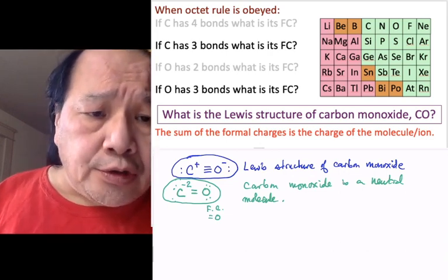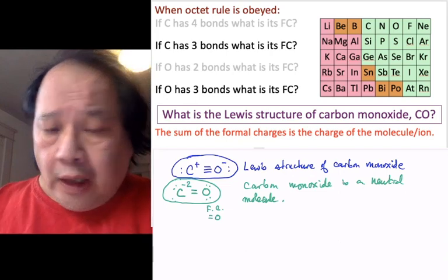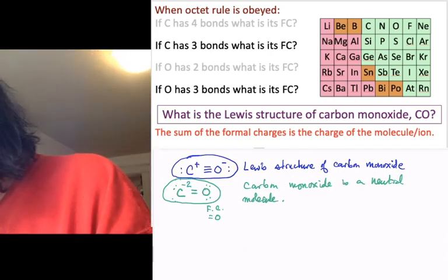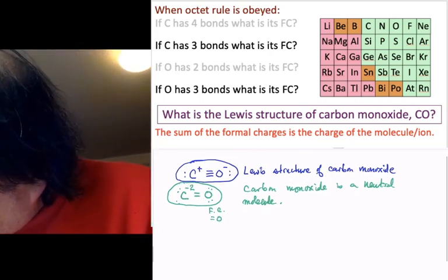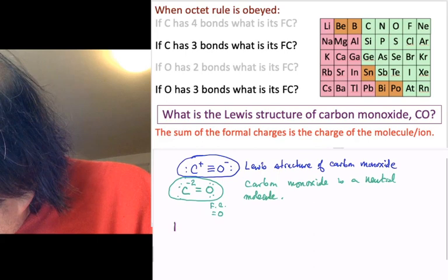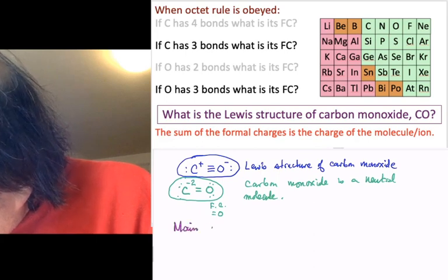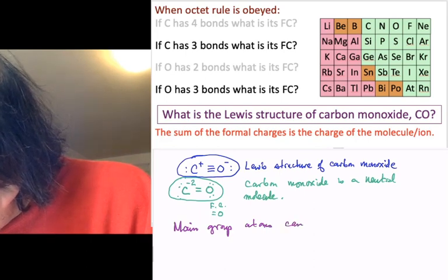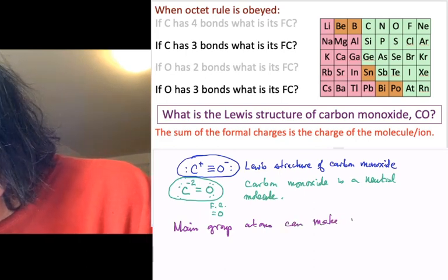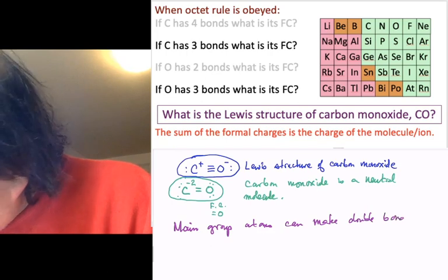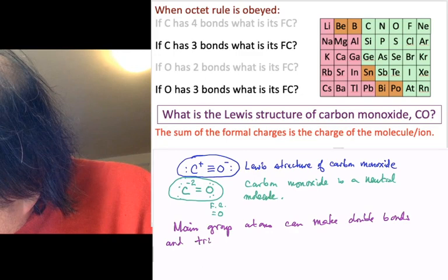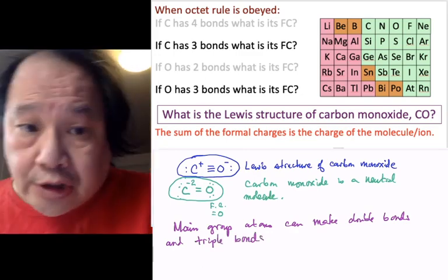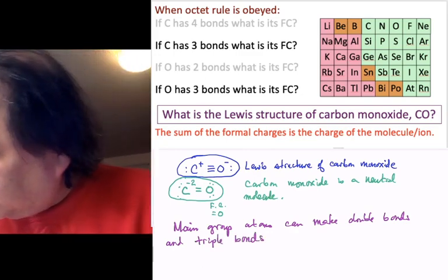This is probably also a good place to learn about multiple bonding. And main group atoms can make double bonds. We saw that with O2 and triple bonds. In the case of carbon monoxide, is it a double bond or triple bond? Put it in chat.